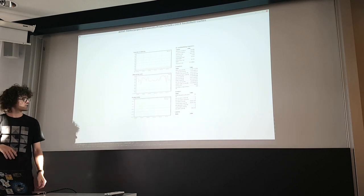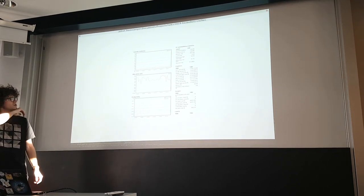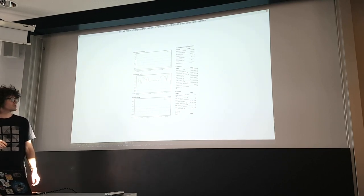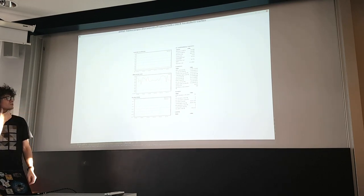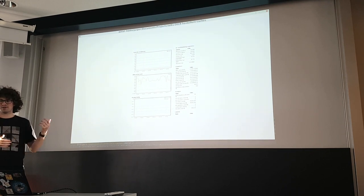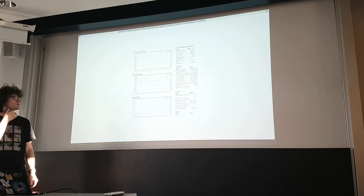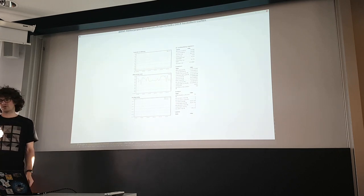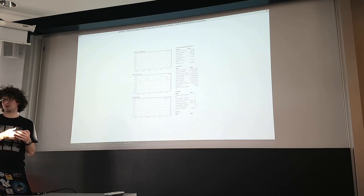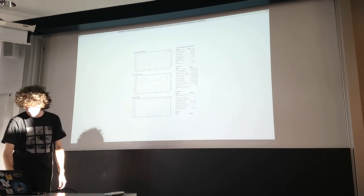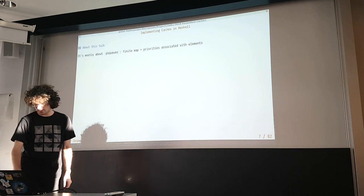Here's one example: EKG, a monitored package available on Hackage, which lets you show runtime statistics about your application. It has a web interface and you can add your own gauges or counters to it. This is one example where you'd want to implement your own cache, so that you can integrate with your EKG metrics and see what's going on.